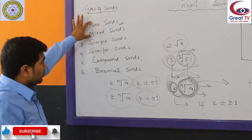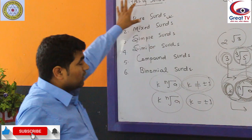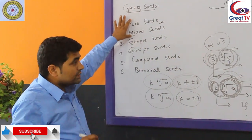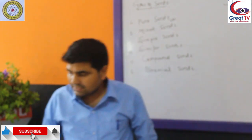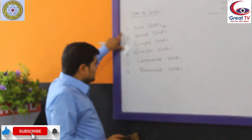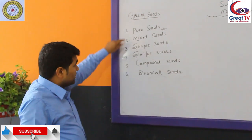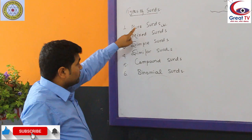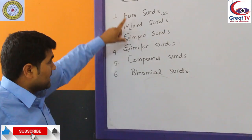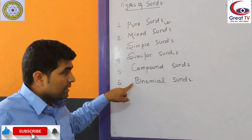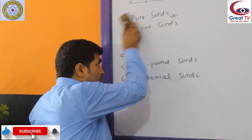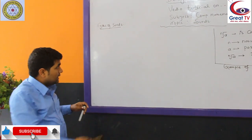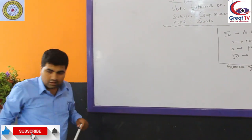These two types — pure surds and mixed surds — are the most important. Now I am going to discuss the relation between two or more surds: that is, like surds and unlike surds.